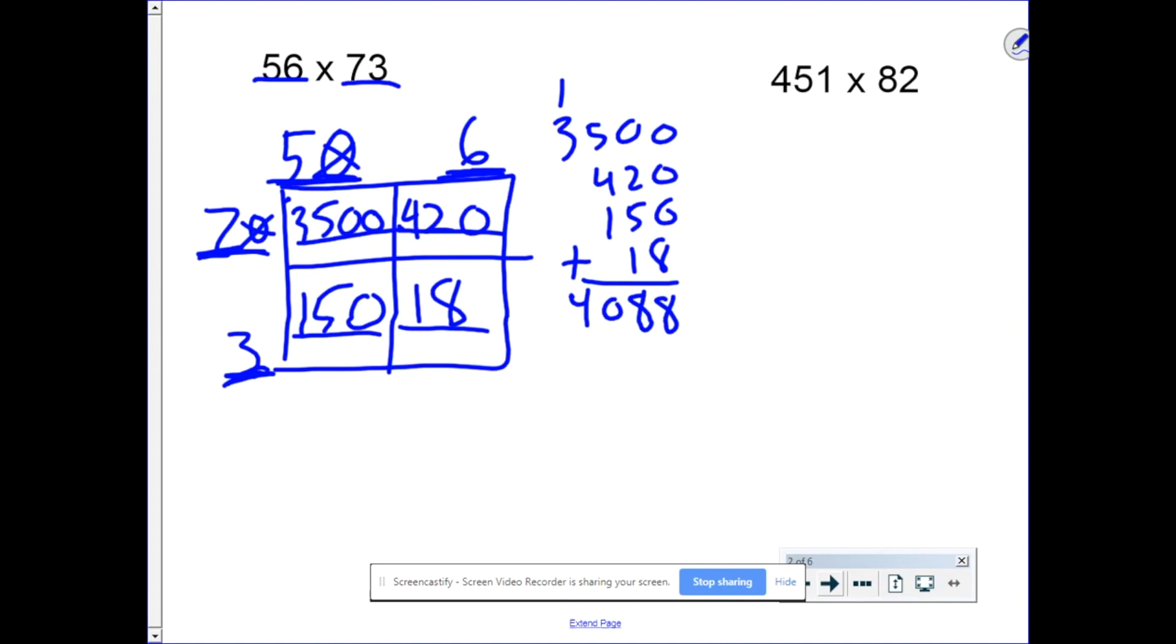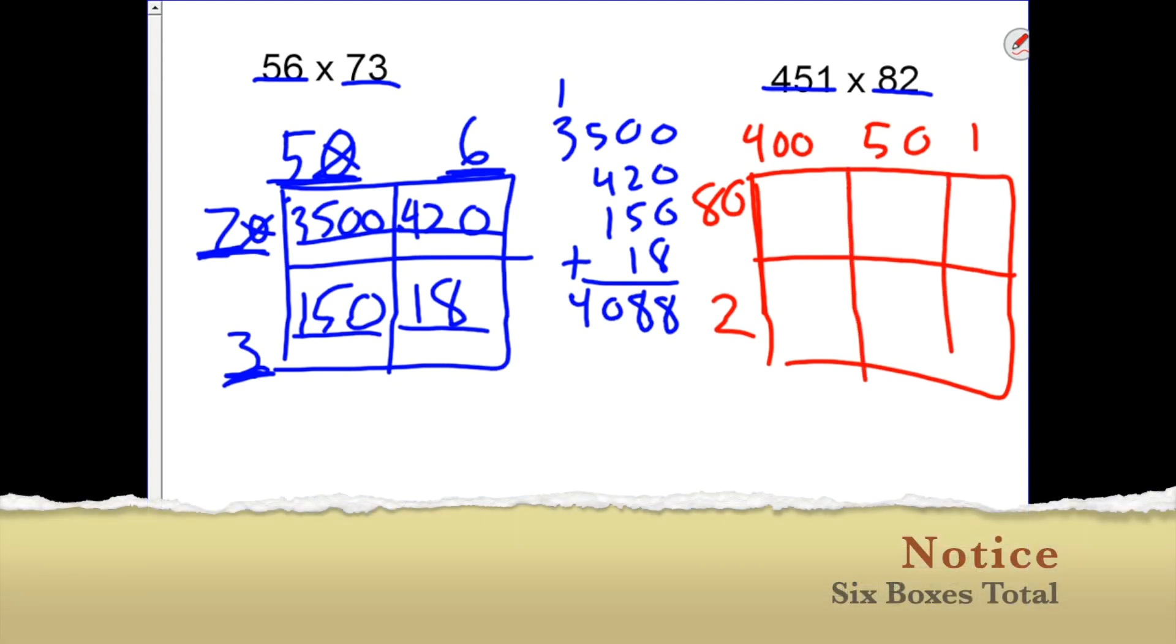But what if there's more than two digits? Well, you still break it down. 451 times 82. 451 is 400, 50, and 1. 82 is 80 and 2. So we need to have two rows, one for the 80 and one for the 2, and three columns for the 400, the 50, and the 1.